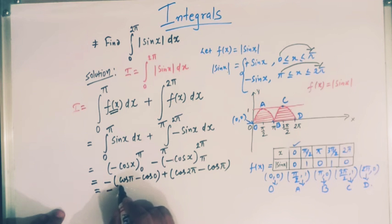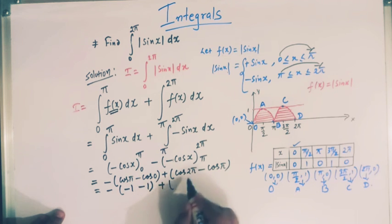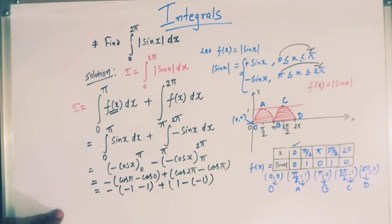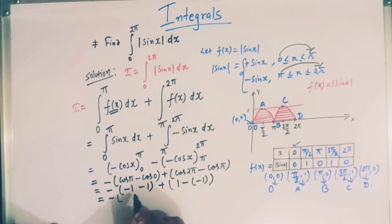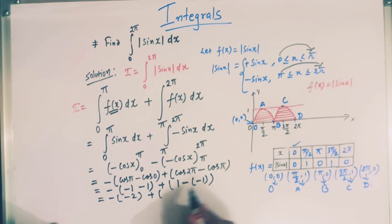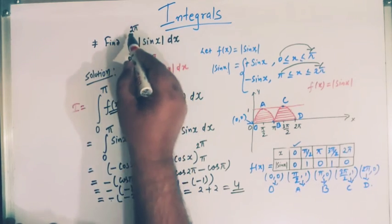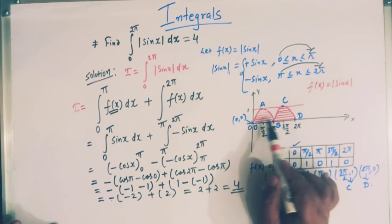Now, cos π = −1, cos 0 = 1, cos 2π = 1, and cos π = −1. Evaluating: −(−1) − 1 = −(−2) = 2 for the first part, and 1 − (−1) = 2 for the second part. So 2 + 2 = 4. The value of this integral is 4, and this 4 represents the total shaded area.